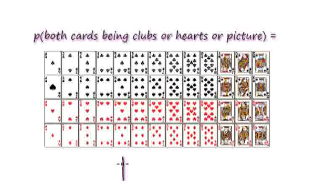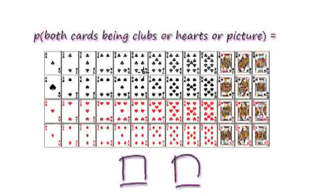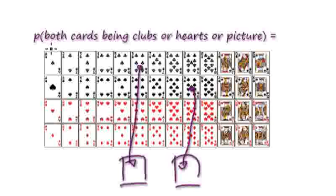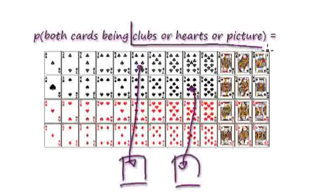Let's say we're going to pick out two cards — let's say this one here, and let's say this one here. Both cards being clubs, or hearts, or picture.